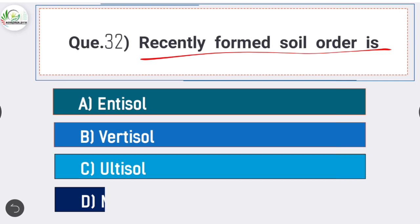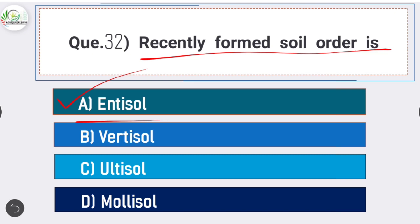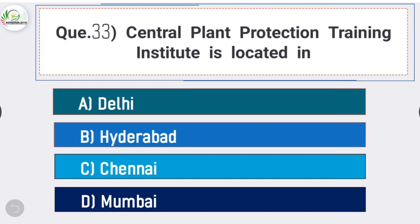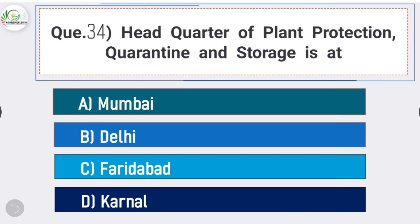Question number thirty-three: Central Plant Protection Training Institute is located in - answer is option B - Hyderabad. Question number thirty-four: headquarters of Plant Protection Quarantine and Storage is at - answer is option C - Faridabad. Headquarters of Plant Protection Quarantine and Storage is located at Faridabad.